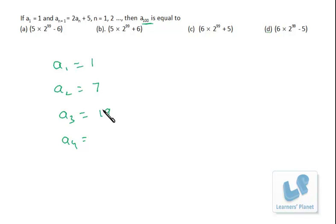But for better clarity of concept and to get assured of the answer, we'll just find out a₄. Now a₄ is 2 times a₃, that is 38 plus 5, that is 43.